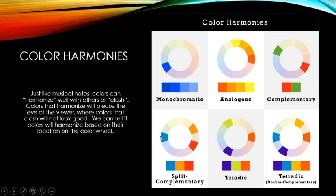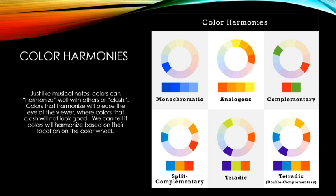A split complementary is slightly less striking but still very pleasing. You take a base color — say blue — find its complementary (orange), but instead of using that exact complementary, you use the two tertiary colors adjacent to it on the color wheel: a goldenrod and a reddish-orange rather than the pure secondary orange.